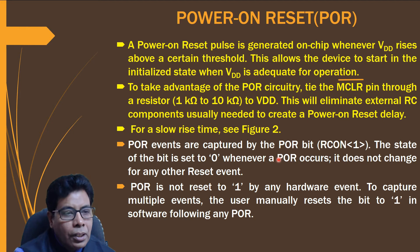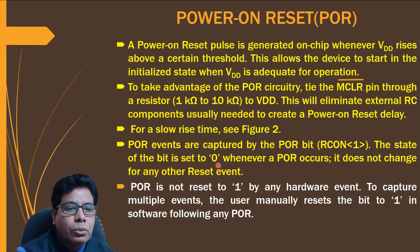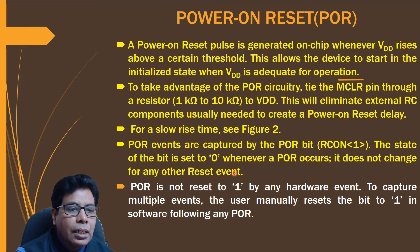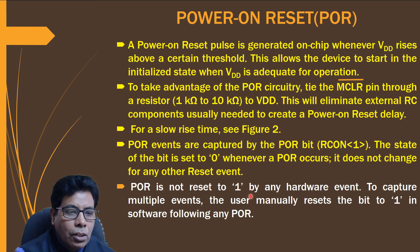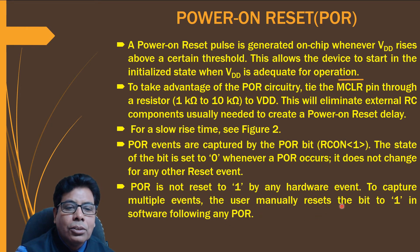The POR events are captured by the POR bit, which is RCON bit 1. This bit is set to 0 whenever a POR occurs — it is active low. It does not change for any other reset event, so it is exclusively for the POR event. The POR bit is not reset to 1 by any hardware event, so to capture multiple events the user manually resets the bit to 1 in software following the POR.